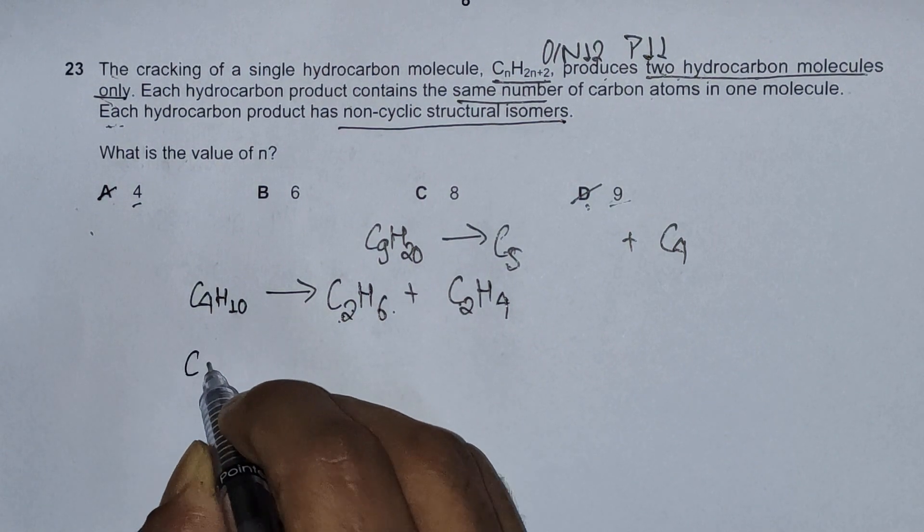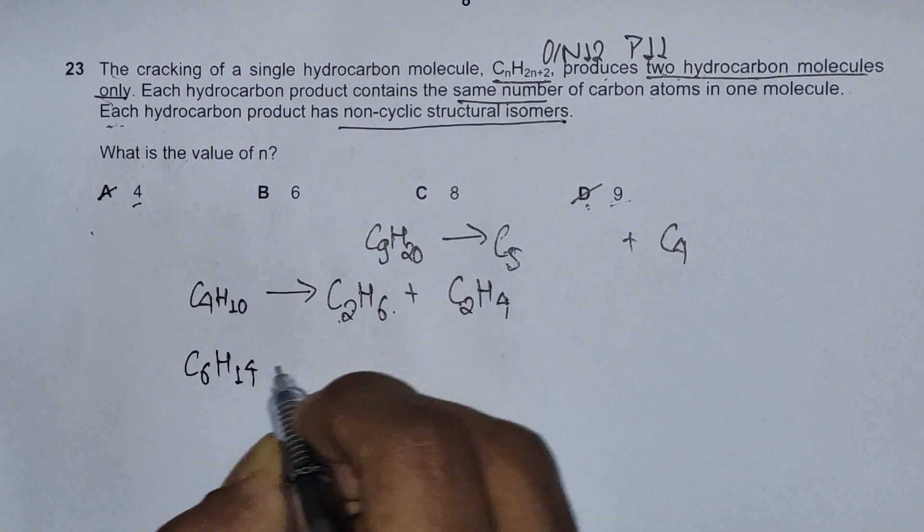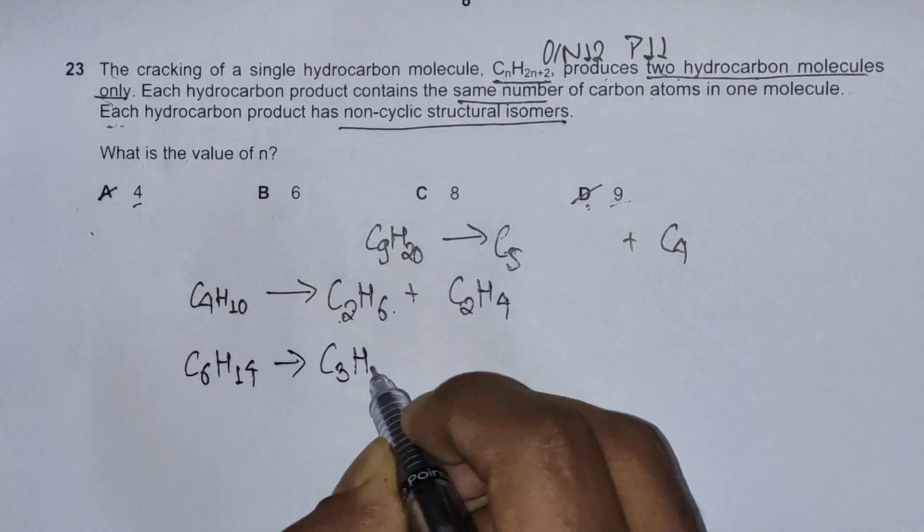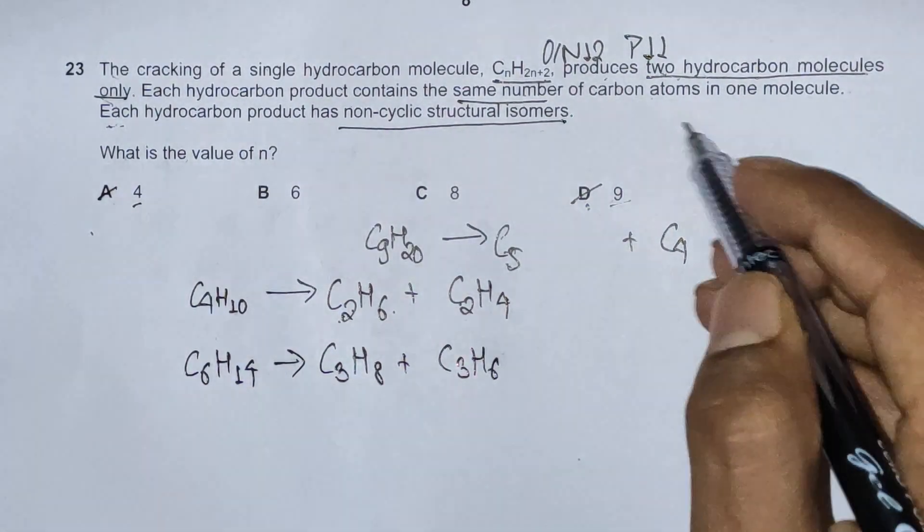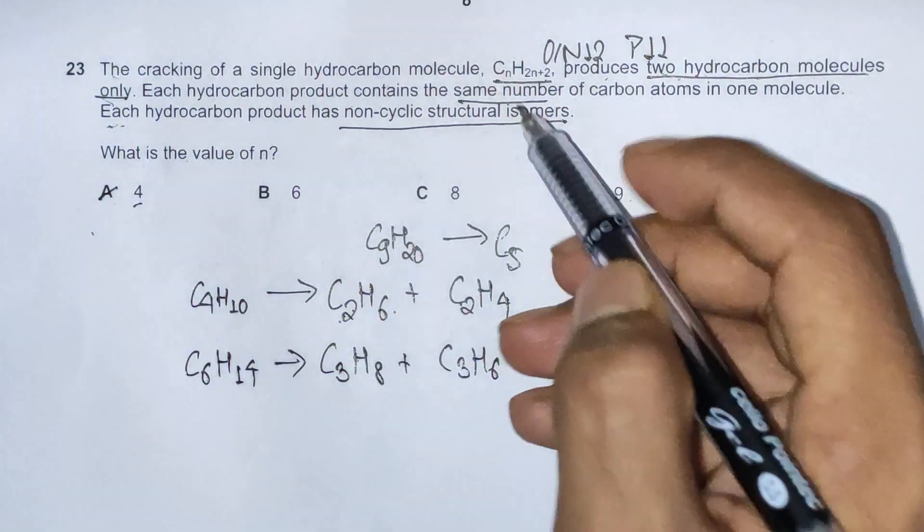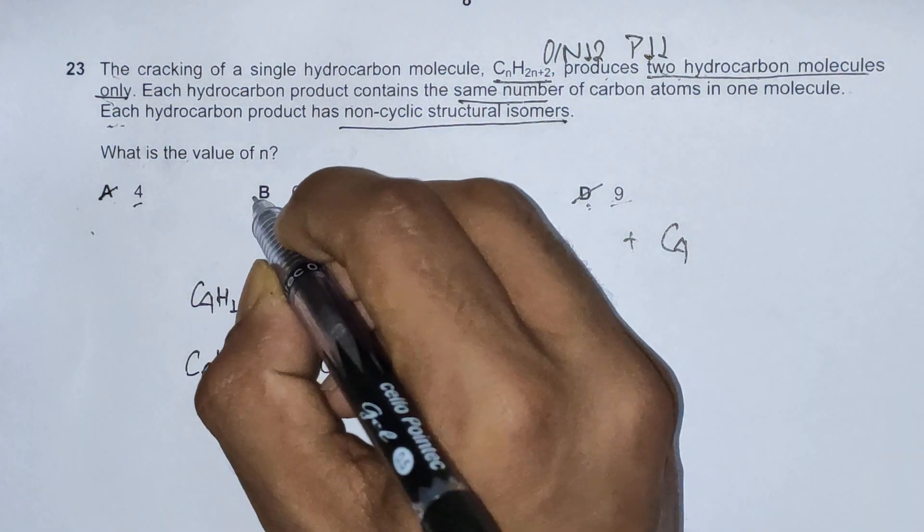Going to B, we have C6H14. This should give us C3H8 plus C3H6. Satisfies the first condition but fails to meet the second criteria. So we'll reject this as well.